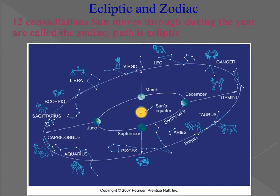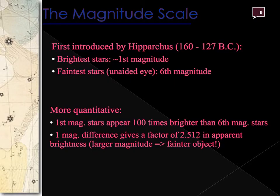The 12 constellations that the sun moves through are called the zodiac, representing the different astrological signs. They are not all equal distances from each other, and remember that there is a 13th — Ophiuchus — that is no longer included. The sun moves along the ecliptic through the signs of the zodiac.